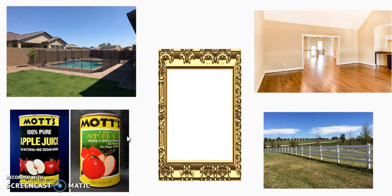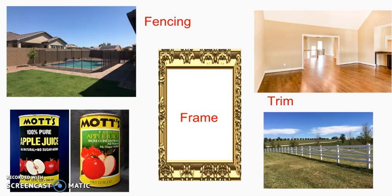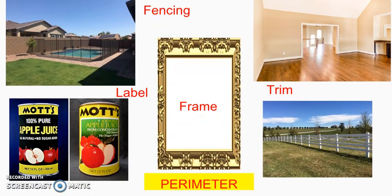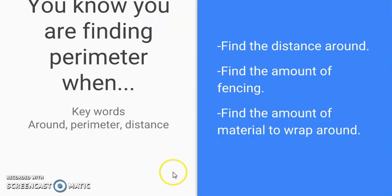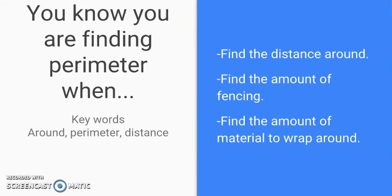Let's look at these images. If you were asked for the amount of fencing needed to go around a pool or a yard, or the amount of trim or frame that goes around a picture, or the trim around a doorway, or the size of a label that goes around a can — all of these are examples of perimeter. Keywords that signal perimeter include: around, distance, and perimeter itself — such as the amount of fencing around a yard or material that wraps around something.